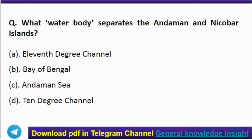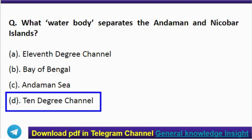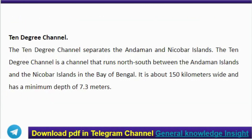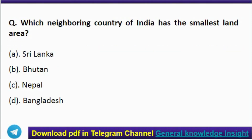Next question: what water body separates the Andaman and Nicobar Islands? The correct answer is option D — the Ten Degree Channel. The Ten Degree Channel separates the Andaman and Nicobar Islands. It runs north-south between the Andaman Islands and the Nicobar Islands in the Bay of Bengal, is about 150 kilometers wide, and has a minimum depth of 7.3 meters.